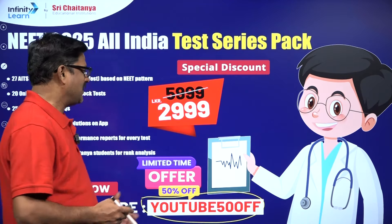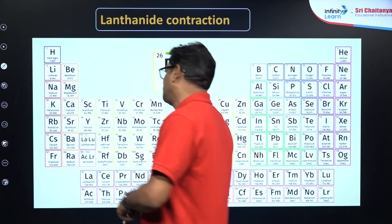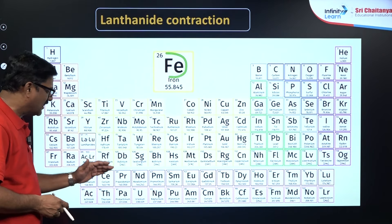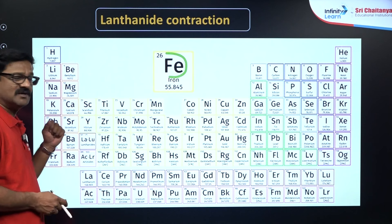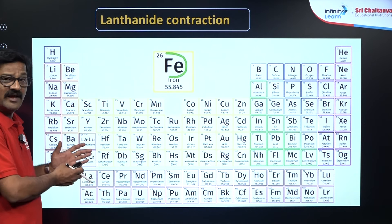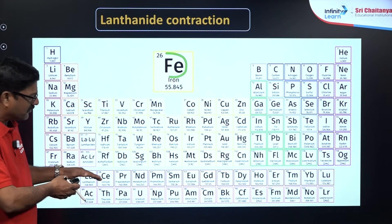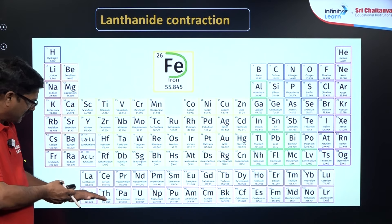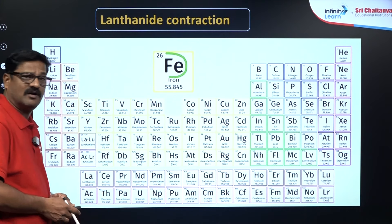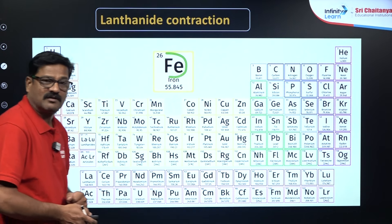Now we are going to discuss lanthanide contraction. The F-block elements are called lanthanides and actinides. Elements in which the differentiating electron enters the 4f-orbital are called lanthanides, and those entering the 5f-orbital are called actinides. Cerium to lutetium are called lanthanides, and thorium to lawrencium are called actinides.